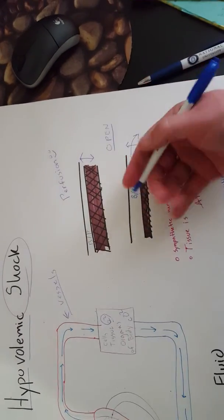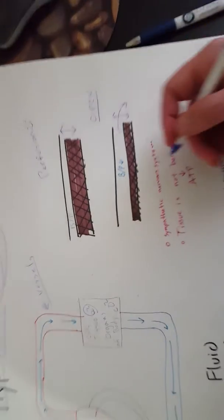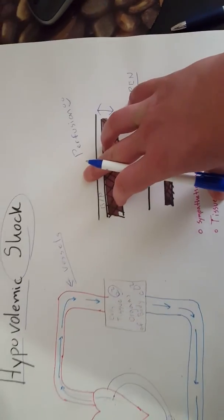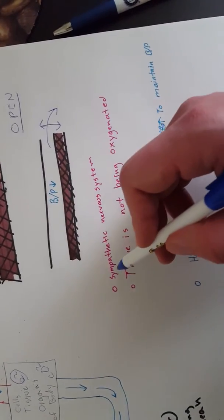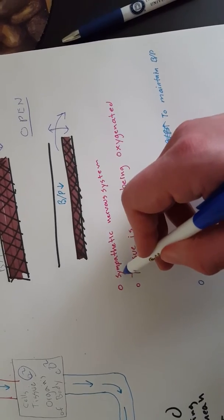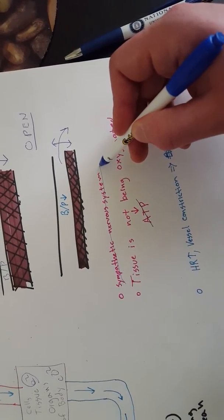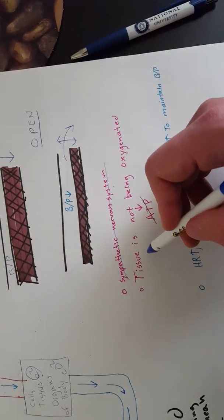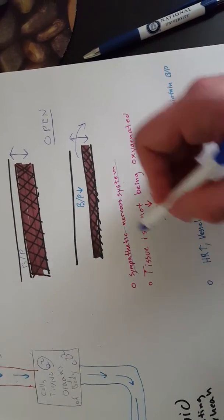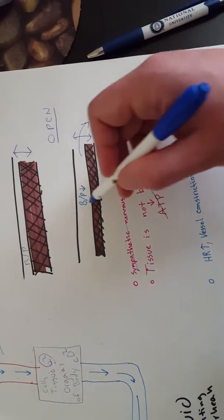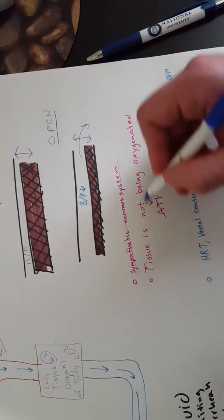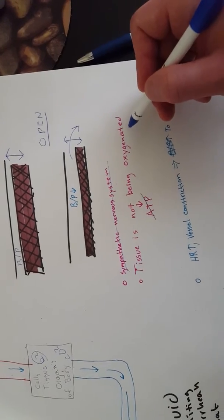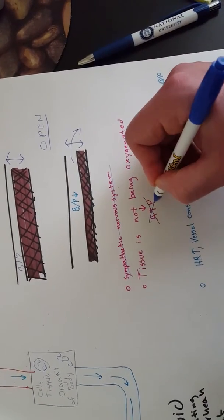So what happens when you have hypovolemic shock or low pressure? Your sympathetic nervous system kicks in because your tissues aren't being perfused adequately. If pressure goes down, your tissues won't get perfused adequately because they're not getting oxygen, so ATP goes down. There's a whole video on that I've made already if you want to cover that.